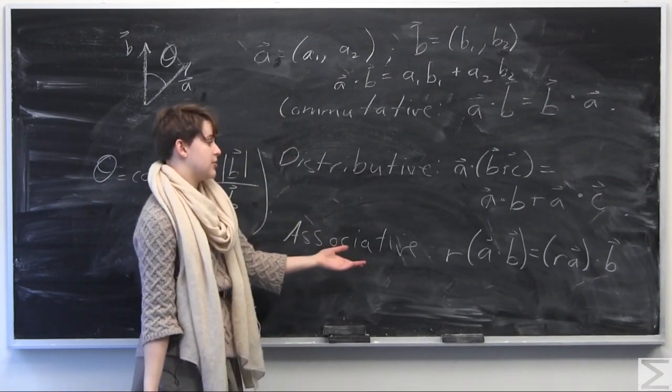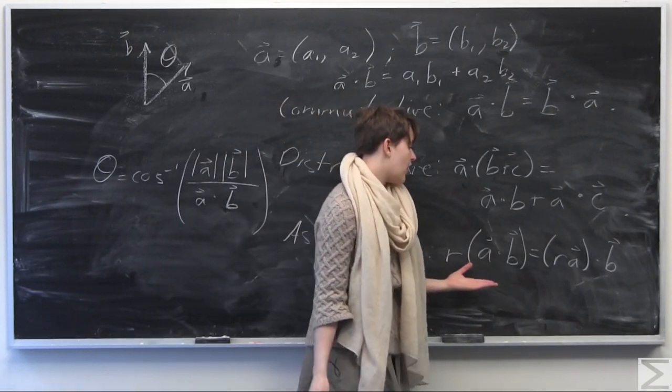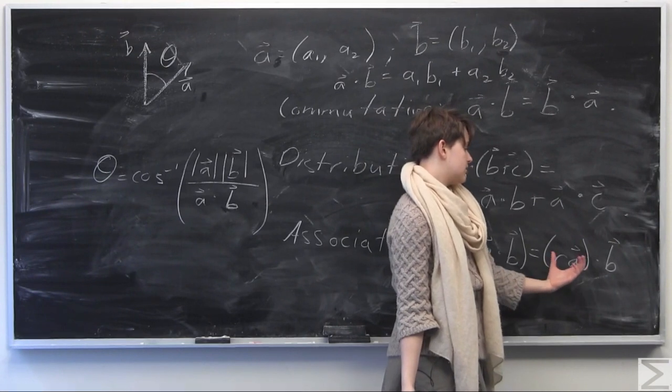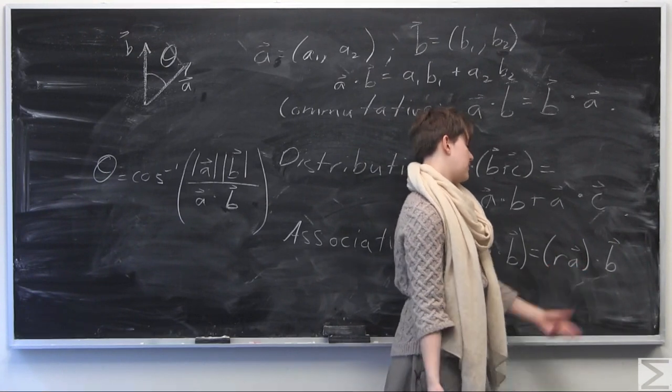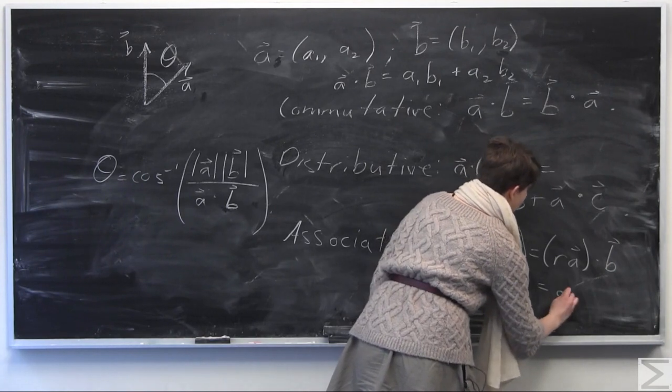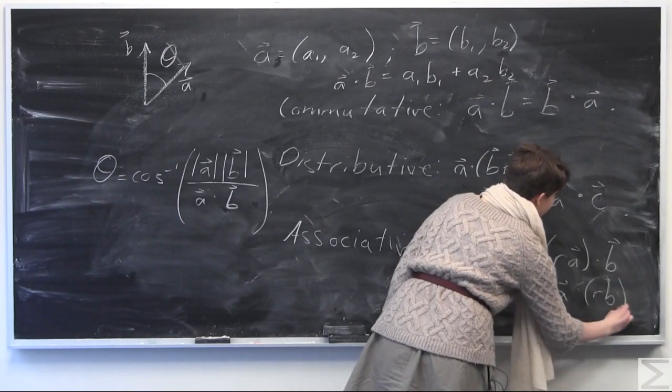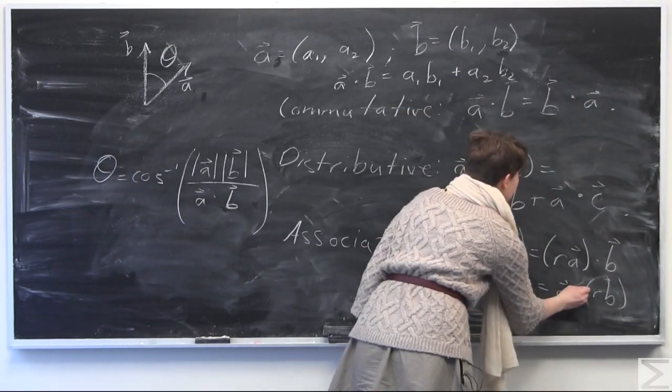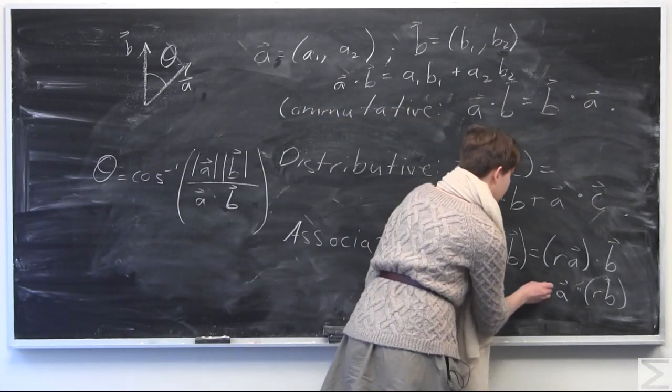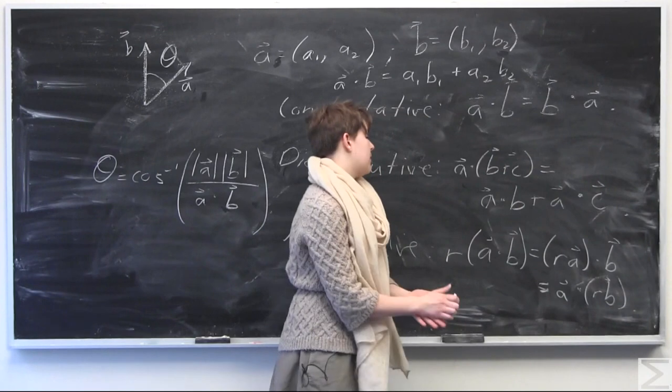And finally, we have the associative property. Where given R, where R is some scalar, some real number here, we have R times quantity A dot B. That would be equal to R times quantity R times vector A dot B. Or you could also say it would be equal to here A dot R times B. I know you couldn't switch the order on here because, once again, the dot product is communicative, so order doesn't really matter here.